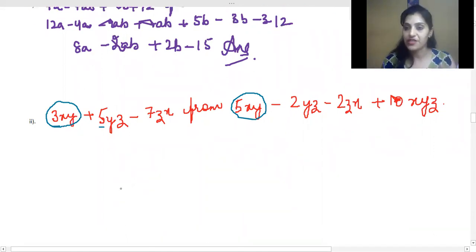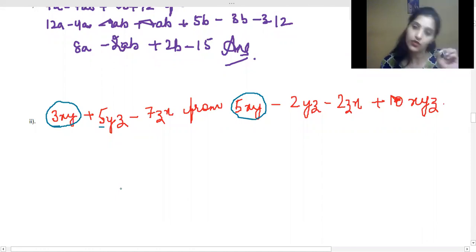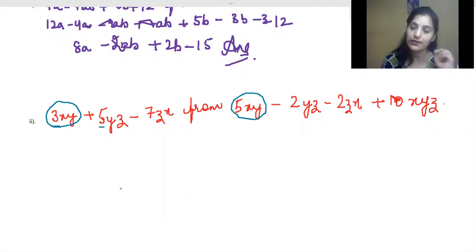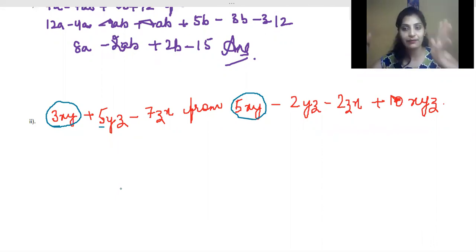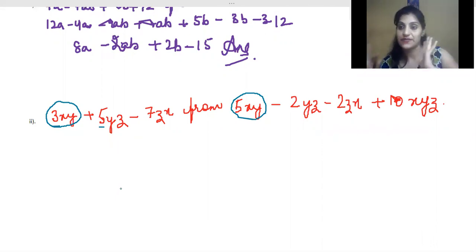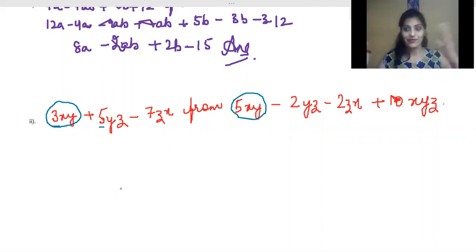For subtraction, we have to follow certain rules, and if we take care of small things our answer will never go wrong. The first rule says that the 'from' expression is the most important — we have to write it first.